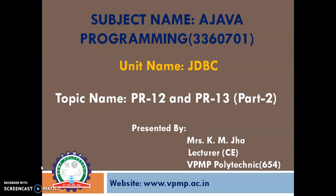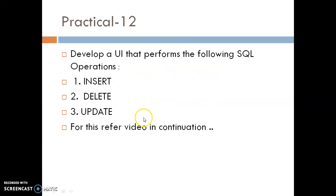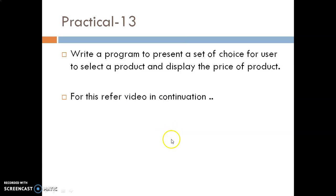For Practical 13, the unit name is JDBC — Unit 3 from Advanced Java. The aim of Practical 13 is to write a program to present a set of choices for the user to select a product and display the price of that product.